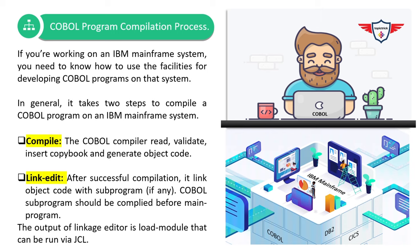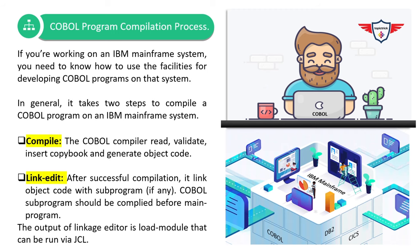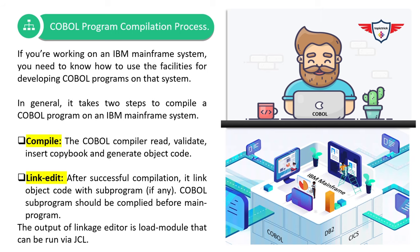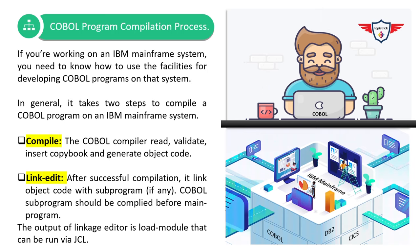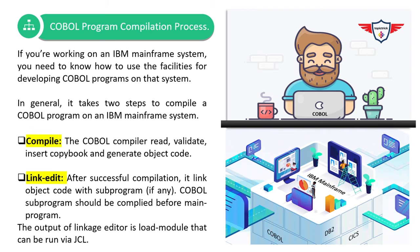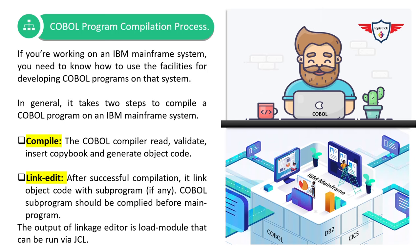If your program is using a copy book, it will be inserted into the program during the compile phase. The program must compile without any syntax error before the second step can be performed. In the second step, the linkage editor links the object module with any sub-program required by the program — either a system program or a COBOL sub-program. Remember, if you are including a COBOL sub-program, you must compile it before compiling the main program. The output of the link edit step is a load module that can be executed via JCL.